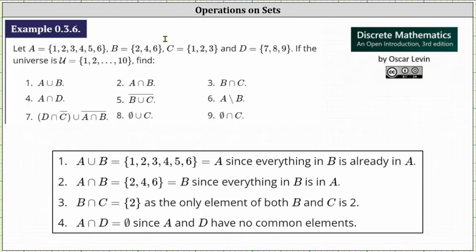For number one, we have A union B. A union B is the set containing the elements in A, or the elements in B, or the elements in both. Analyzing the elements in set A and set B, all of the elements in B are also elements in A, and therefore A union B is just equal to set A, which is the set containing 1, 2, 3, 4, 5, 6. We can also think of the union of two sets as combining the two sets, but we don't list elements more than once.